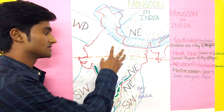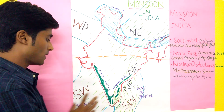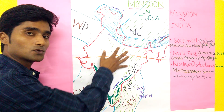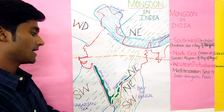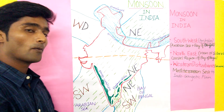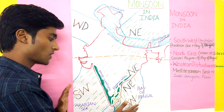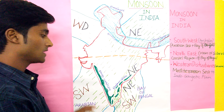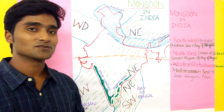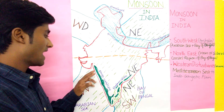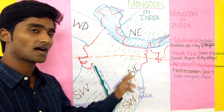So wind flows from high pressure to low pressure, and that's why it gives rain to India from the Bay of Bengal as well. This Southwest monsoon gives 60% of the rain to India, and here we have the Western Ghats and the Eastern Ghats.